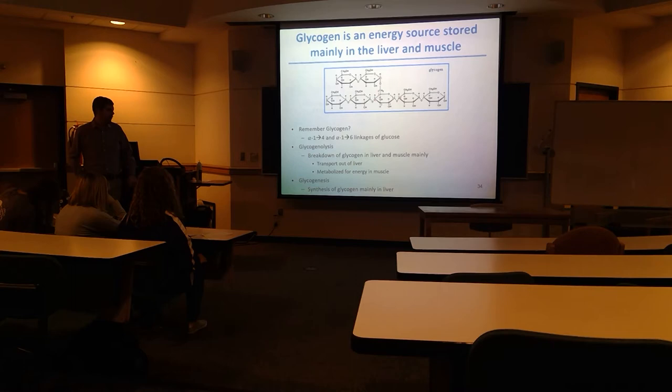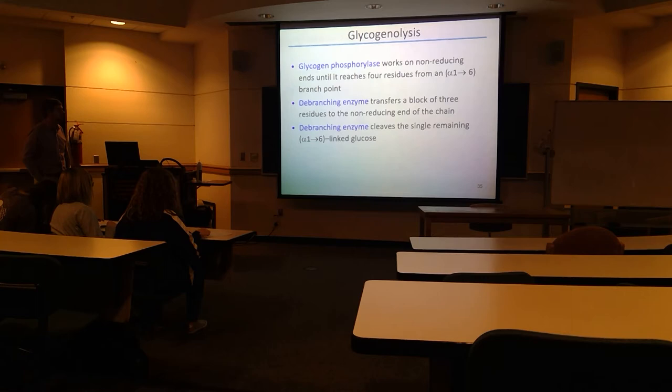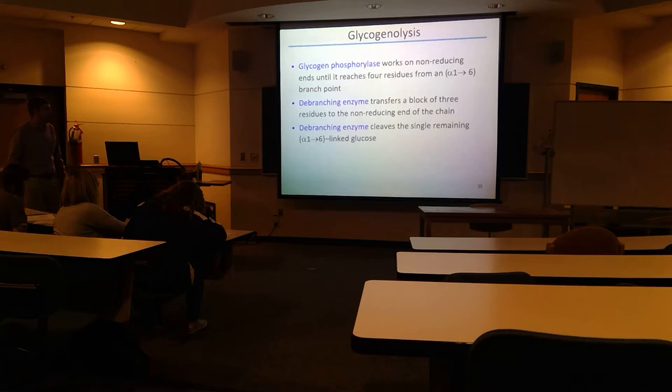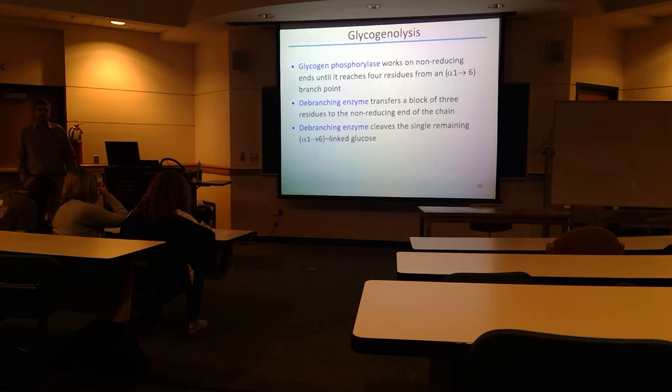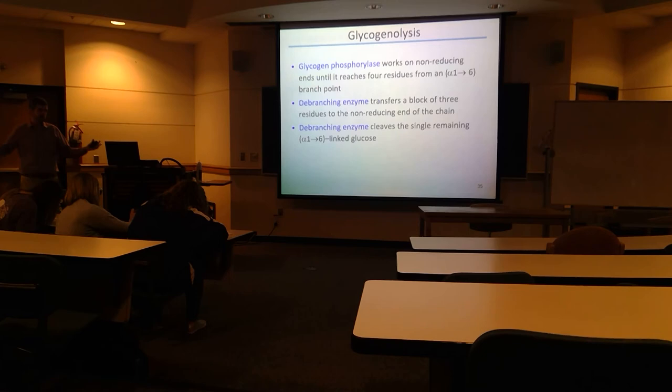We'll start with glycogenolysis — how we break down glycogen. That's a series of enzymes. The first one is glycogen phosphorylase. This enzyme starts at the non-reducing ends of glycogen. There are a lot of non-reducing ends on glycogen, so multiple glycogen phosphorylase molecules hook onto the branches of the glycogen tree and start to break off pieces of the linear parts.